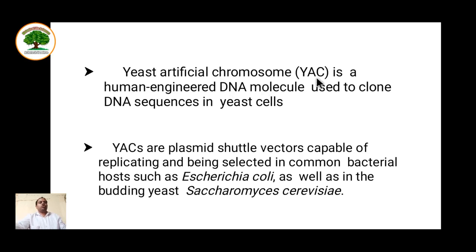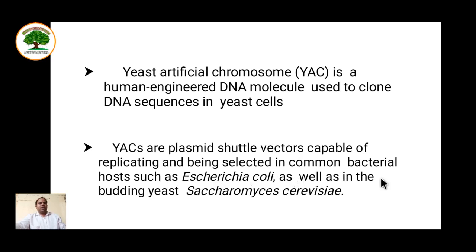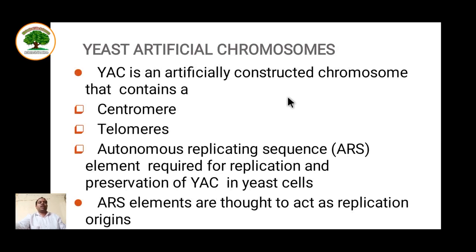Yeast artificial chromosome is a human-engineered DNA molecule used to clone DNA sequences in yeast cells. These are vectors popularly used in the human genome sequencing project, as they can clone larger fragments of DNA. YACs are plasmid shuttle vectors capable of replicating and being selected in common bacterial hosts such as E. coli as well as budding yeast such as Saccharomyces cerevisiae. So this vector shuttles between both eukaryotic and prokaryotic organisms.